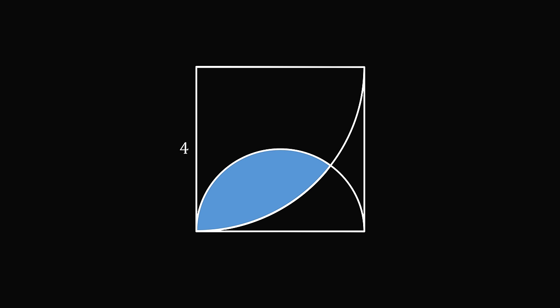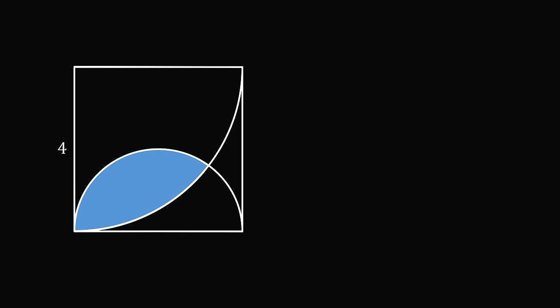So how can we work this out? We will begin, like many geometry problems, by making a few constructions that will make the calculation easier. Start with the center of the quarter circle. The quarter circle has a radius equal to the side length of the square, which is 4. Construct a radius to the intersection point of the quarter circle with the semicircle — this radius will also have length 4. Then construct the center of the semicircle. The diameter of the semicircle is equal to 4, so its radius will be half of that, equal to 2. Construct a radius to the intersection point, which also has length 2. Now connect the centers.